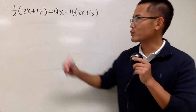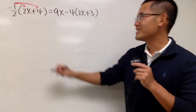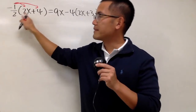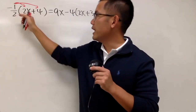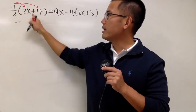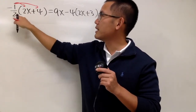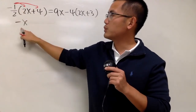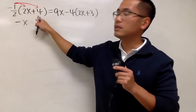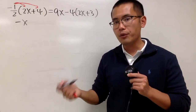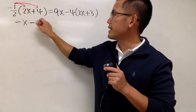To solve this equation, we distribute the numbers in front of the parentheses first. Negative 1 half times 2x — you take half of 2, which is 1, but it's negative — so we get negative x. And negative 1 half times 4: half of 4 is 2, and negative times positive is negative, so we have negative 2. So the left side is negative x minus 2.